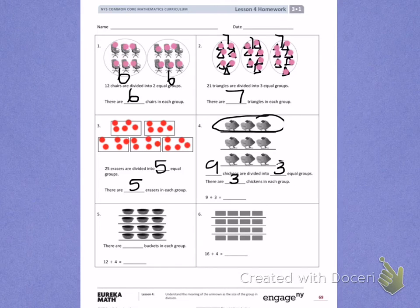9 divided by 3, which is the problem I just solved, is 3 because there are 3 chickens in each group. Try number 5 and 6 on your own.